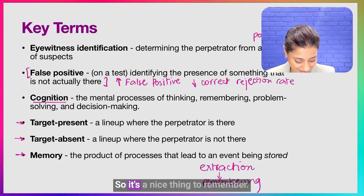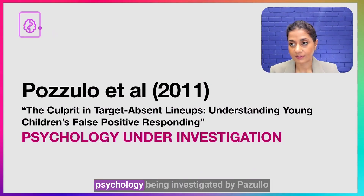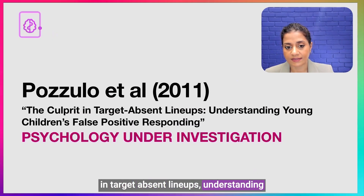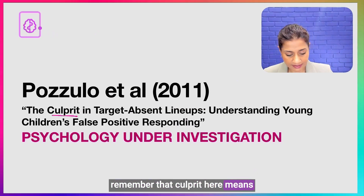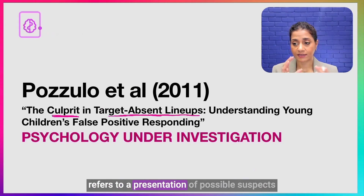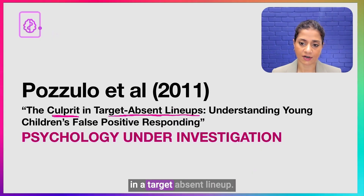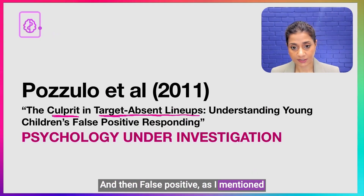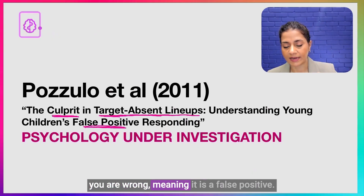Now let's talk about the psychology being investigated by Pozzuolo et al. in this study, which is called 'The Culprit in Target Absent Lineups: Understanding Young Children's False Positive Responding.' The word culprit means the person who committed a crime. Target absent refers to a lineup of possible suspects of whom none are actually the culprit — the target, meaning culprit, is not present. A false positive is when you identify something as being there when it's not actually there.